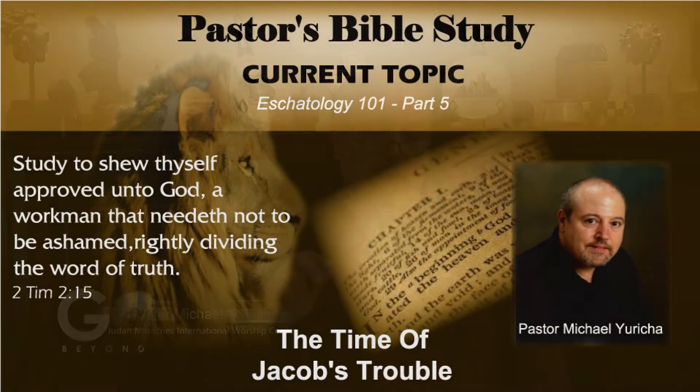Today we are continuing our study of Eschatology 101. Today is part five, our fifth lesson. Our focus today is on the time of Jacob's trouble. We're going to primarily look at two passages of Scripture — Romans chapter 10 into chapter 11, and Jeremiah chapter 30. Those are going to be our primary sections of Scripture that we will look at today.